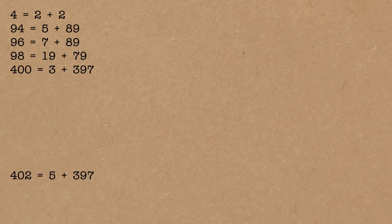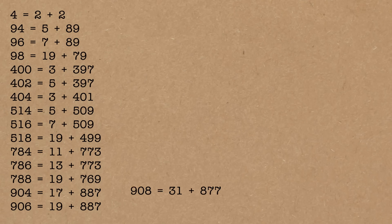For Goldbach's conjecture with just the primes — the original Goldbach's conjecture — there aren't any near misses. If we prove the Goldbach's conjecture for twin primes, it would automatically prove the original Goldbach's conjecture. If we prove that every even number is the sum of two twin primes, then obviously it's going to be the sum of two primes, since twin primes are primes. The only thing we'd have to do is check the 35 exceptions, which are small enough to verify.